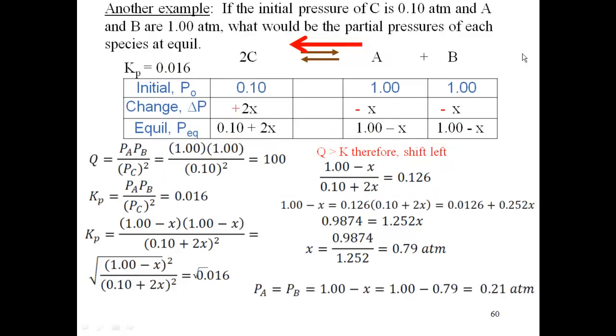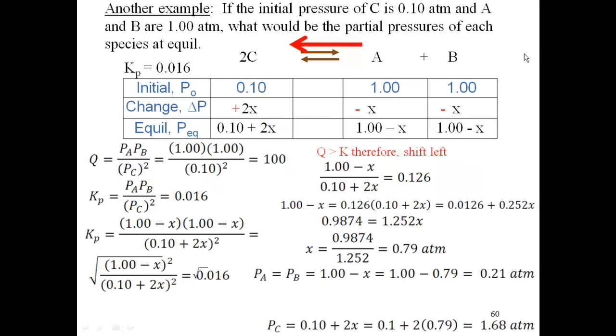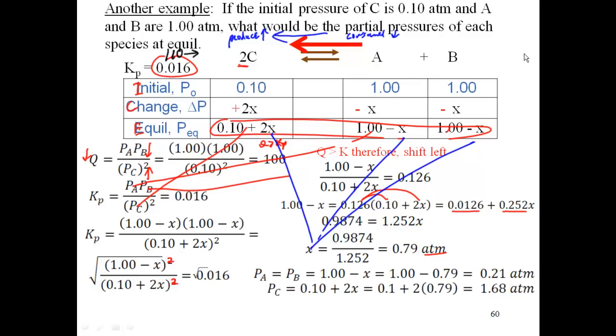So if I do that, partial pressure of A is the same as partial pressure of B, which is equal to 1 minus x, which is 1 minus 0.79, which is 0.21 atmospheres. And partial pressure of C is 0.1 plus 2x, which is 0.1 plus 2 times 0.79, which is 1.68 atmospheres. Now if I plug those back into my expression, I should get a K that's close to 0.016. Remember that uncertainty number, that last digit's uncertain, so that's going to be plus or minus on that number right there, since it's only 2 significant figures.